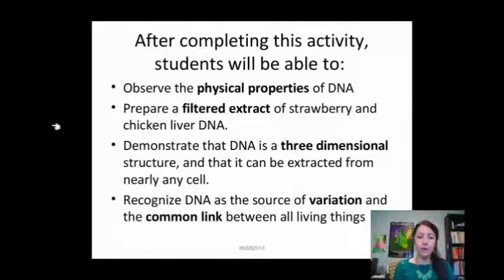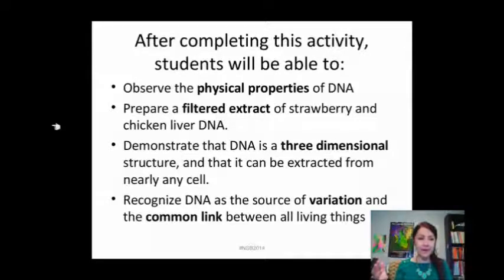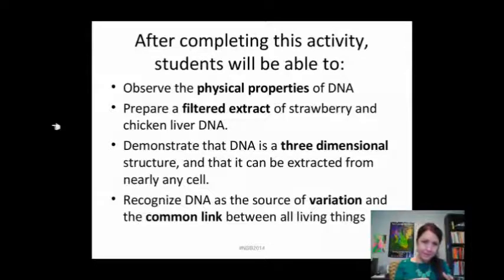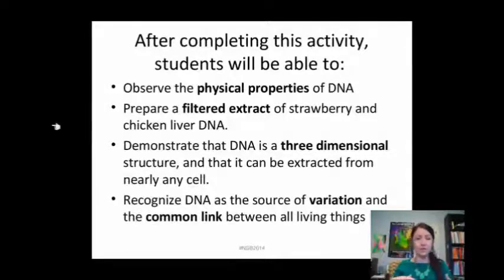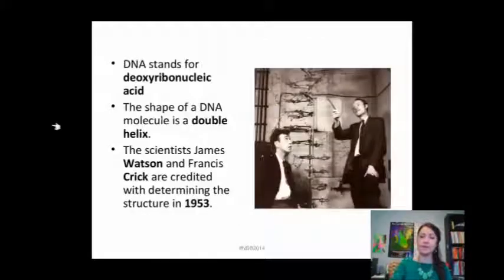We will recognize DNA as the source of variation — everything is different because it has different DNA, but some things are more similar because they have similar DNA, while things that are distant ancestors are more different because they have different A's, T's, G's, and C's. DNA is the common link between all living things.